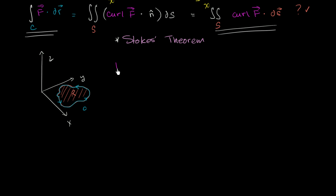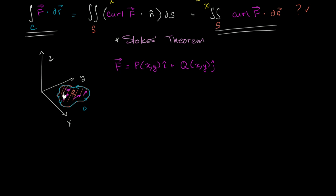And let's say that we also have a vector field F, where its i-component is just going to be a function of x and y, its j-component is only going to be a function of x and y, and let's say it has no k-component. So the vector field on this region wouldn't change as you change your z component — all of the vectors would essentially be parallel to, or if z is 0, actually sitting on the xy-plane.